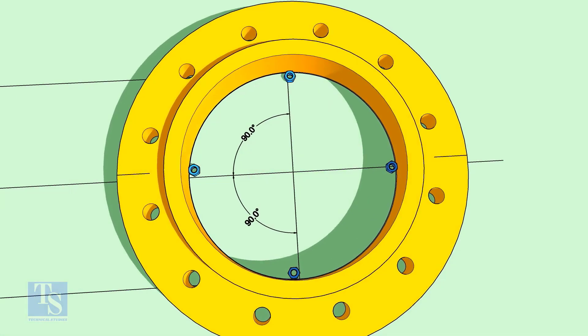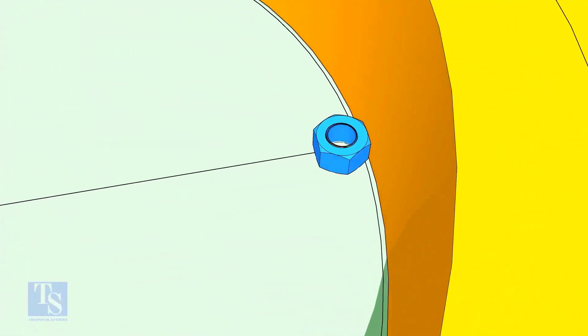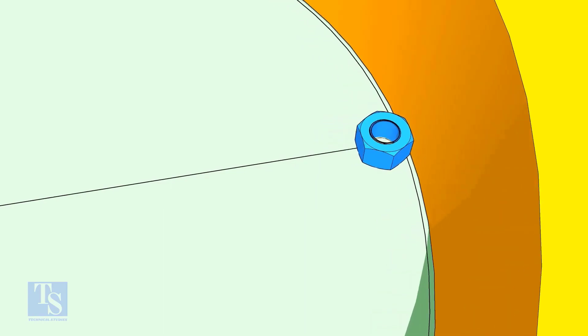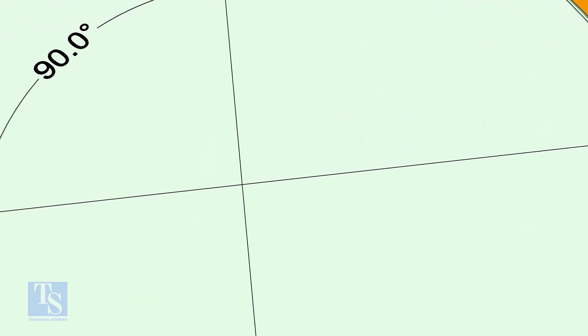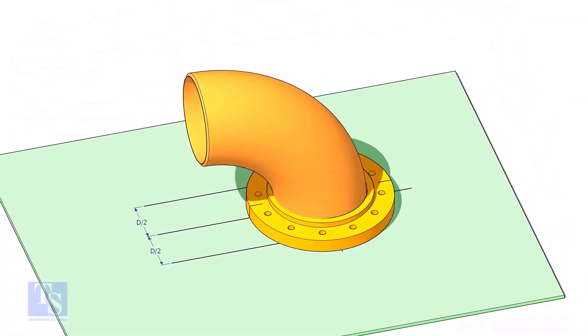Put four nuts in the flange as shown. The thickness of the nut shall be equal to the thickness of the elbow, or as per the weld size given in the drawing. Put the elbow in the flange.